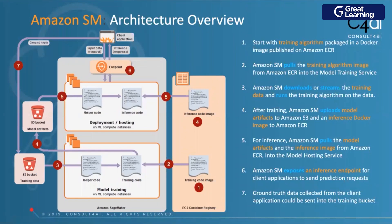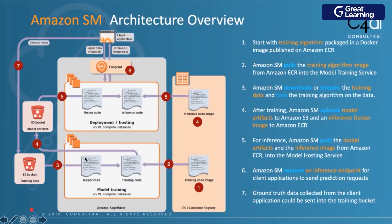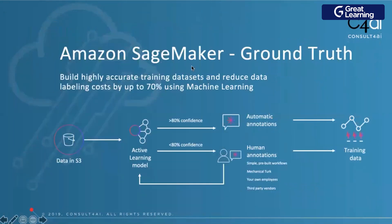All this information is available in Amazon documentation — every single step of how the process works. To summarize: pick up a Docker container, bring it into a session, take your data and bring it into your SageMaker session. Once you build your training, the training artifacts get stored inside S3. Your inference code image is also created. When you run inference, both are combined together to create an endpoint, and from an external application you call that endpoint to get your predictions back. That's the entire lifecycle.